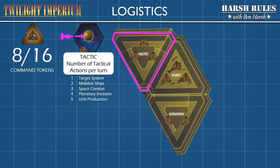First, the Tactics space. Command Tokens in the Tactics space dictate the number of tactical actions a player can conduct per turn. In each tactical action, a player targets a system on the galaxy map, mobilizes their fleet to intercept, resolves any conflict in the system, and produces new units there. When a player conducts a tactical action, they place one Command Token from the Tactics space onto the targeted system.